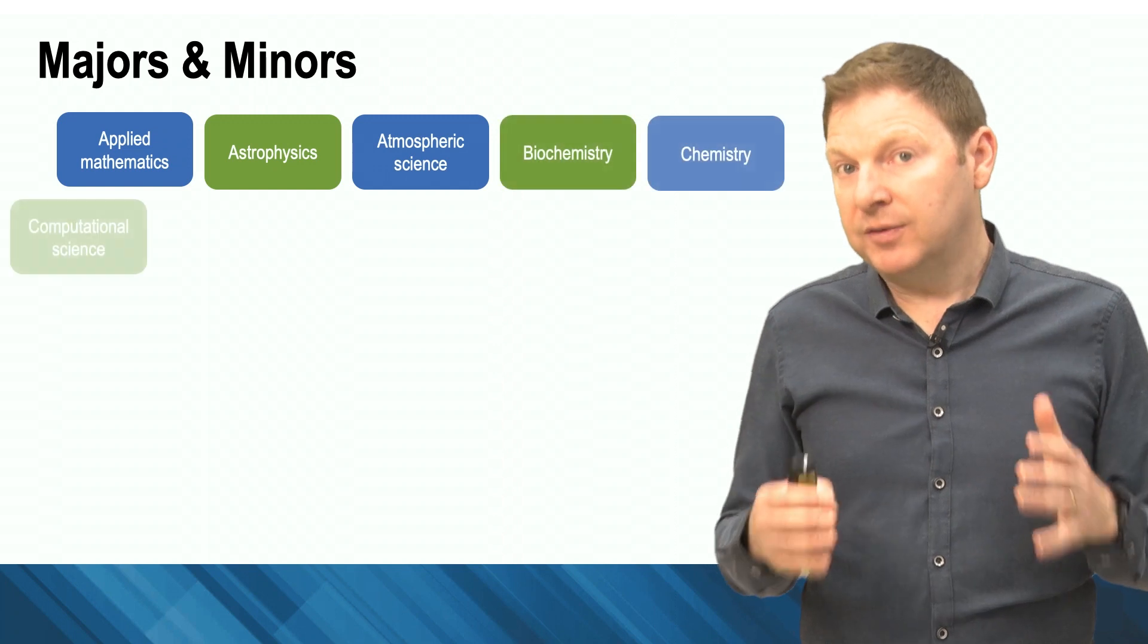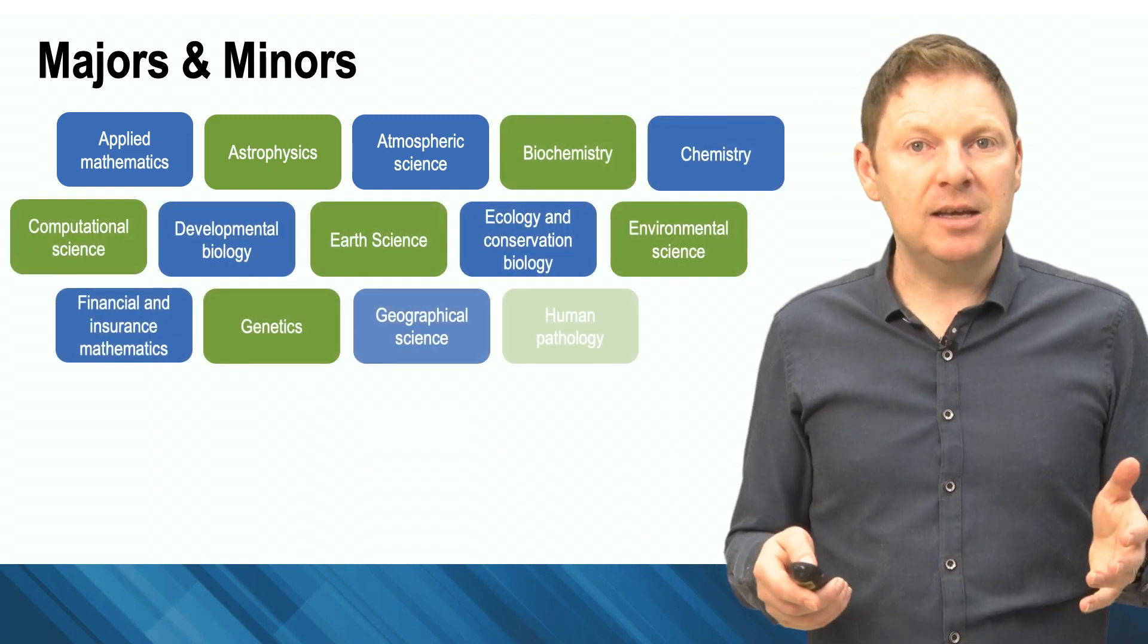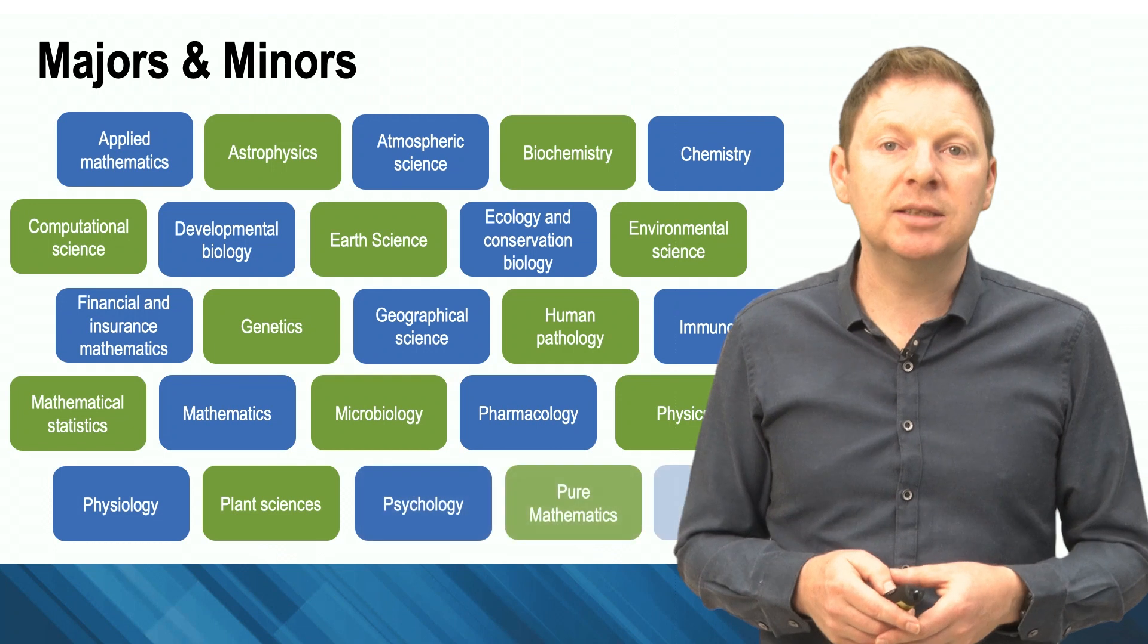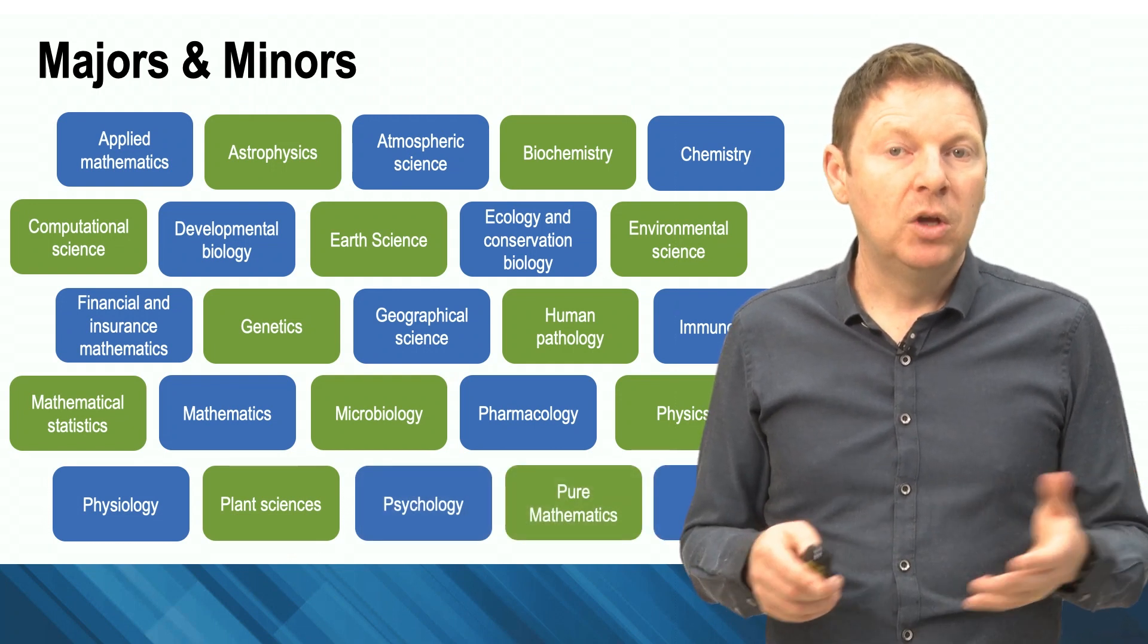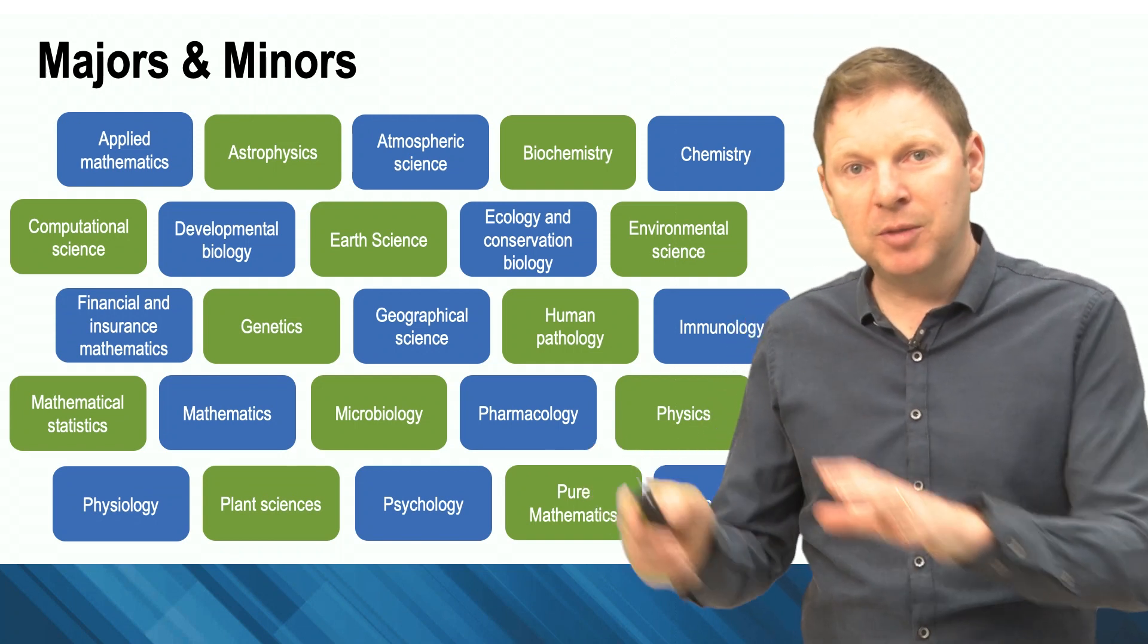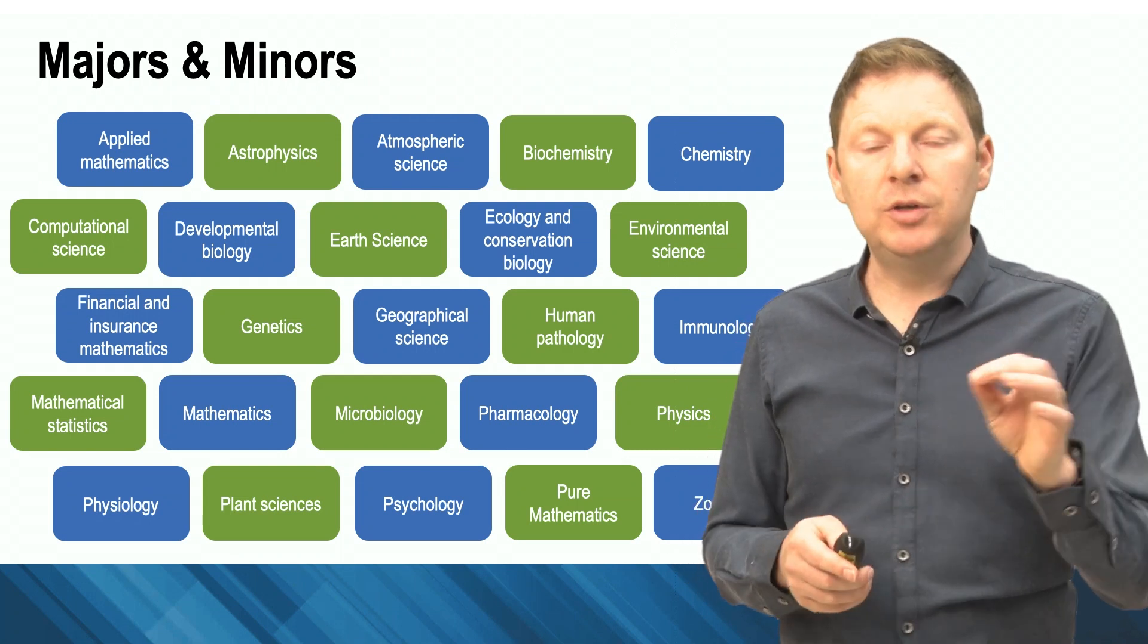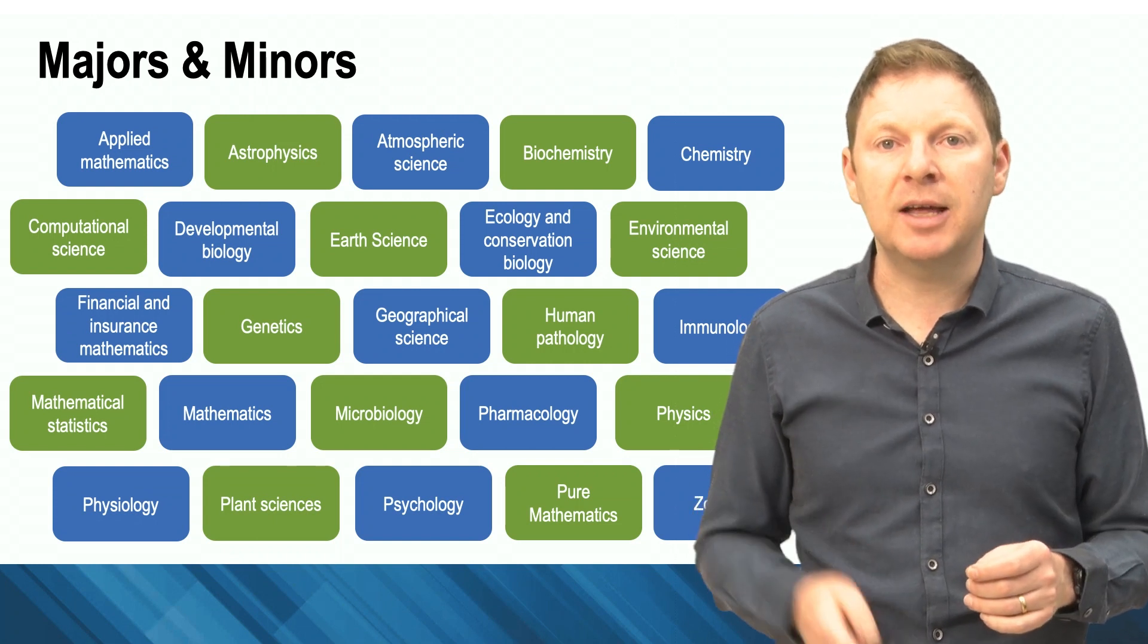There are 25 different areas that you can complete your major in. You can see the list here, and some of these things are going to be areas that you're familiar with. Some of them overlap with VCE subjects, but some of them are probably areas you've never heard of before. So it's really important that you look at our handbook, which I'm going to show you in a moment, to investigate all of these different disciplines and learn a bit more about them. The really good news is you don't have to lock your major in in the first year of your course, and I'll come back to that towards the end.